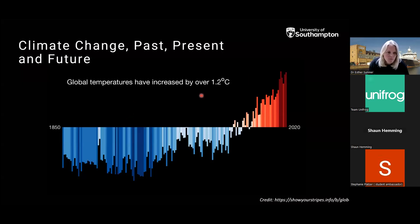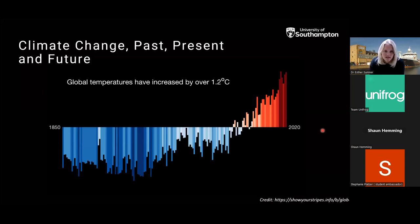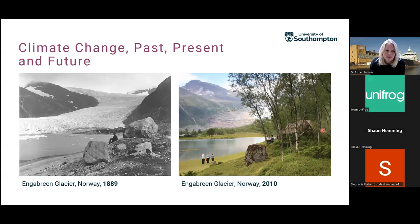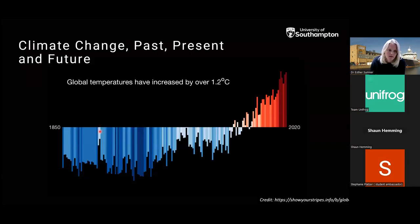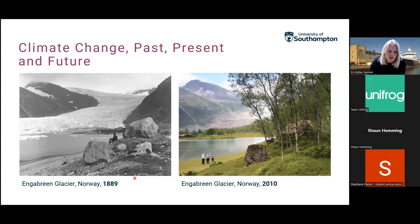This graph shows how global temperatures have increased by over 1.2 degrees Celsius since the pre-industrial era to the present day. This has impacts including increased extreme weather events, heat waves, droughts, and rising sea levels due to expansion of seawater and melting of ice sheets. Here is the Engabreen Glacier in Norway in 1889 — a Victorian gentleman surveying a glacier coming all the way down the valley. Fast forward to 2010 and the same view shows very little of that glacier left.